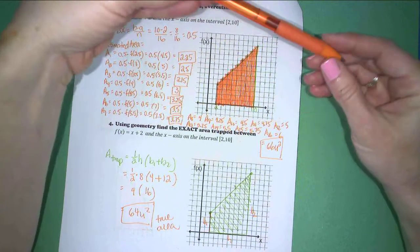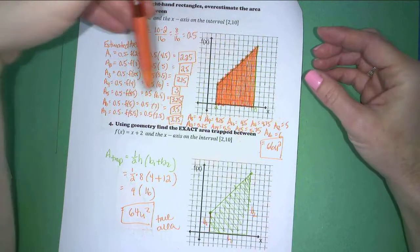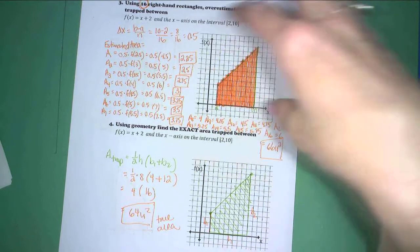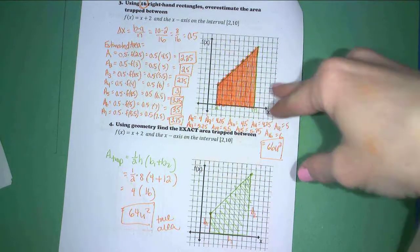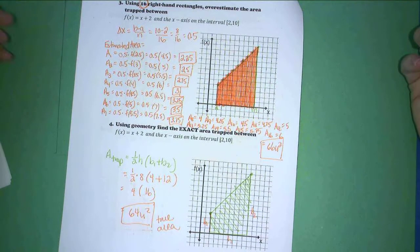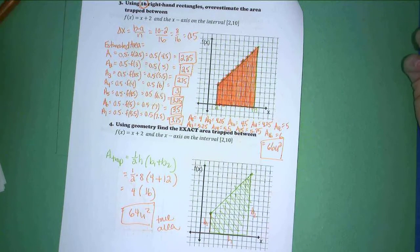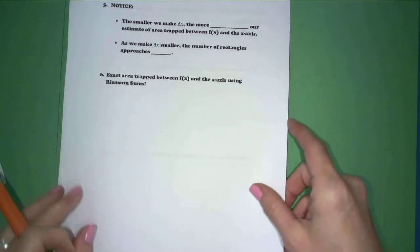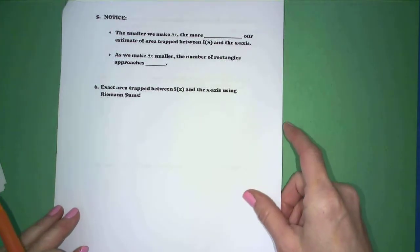So, a man by the name of Riemann decided to take what he was doing on paper and with pictures and turn it into more of a formula that would model what we want to do on paper. So, if you flip the page, we're going to fill in some blanks about what we've been doing.